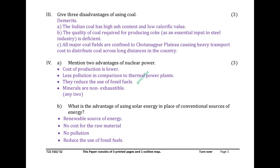Give three disadvantages of using coal. Demerits: The Indian coal has high ash content and low calorific value. The quality of coal required for producing coke, as an essential input in steel industry, is deficient. All major coal fields are confined to Chotanagpur plateau, causing heavy transport cost to distribute coal across long distances in the country.